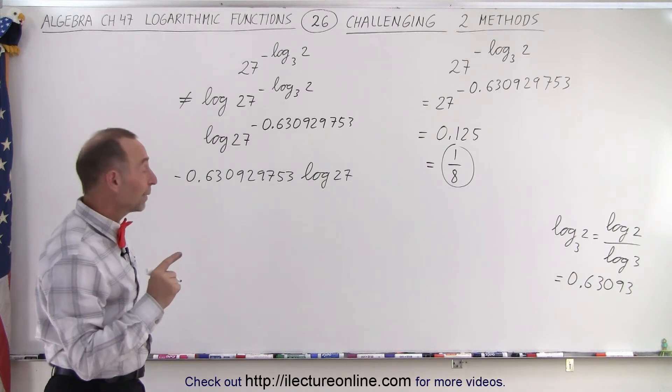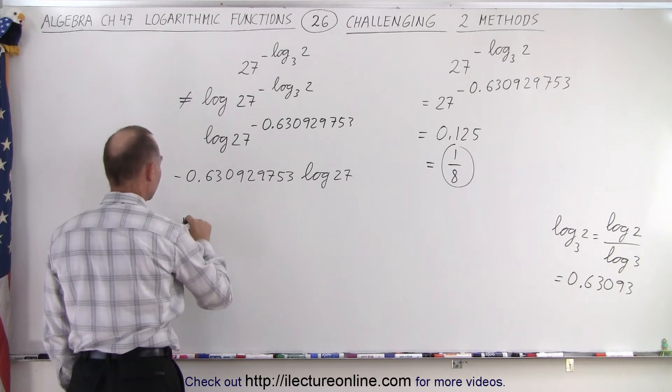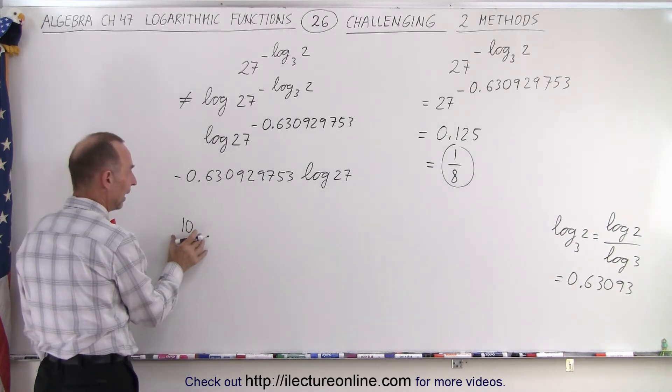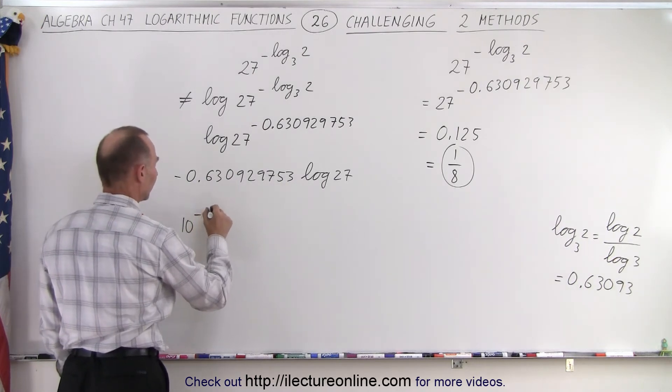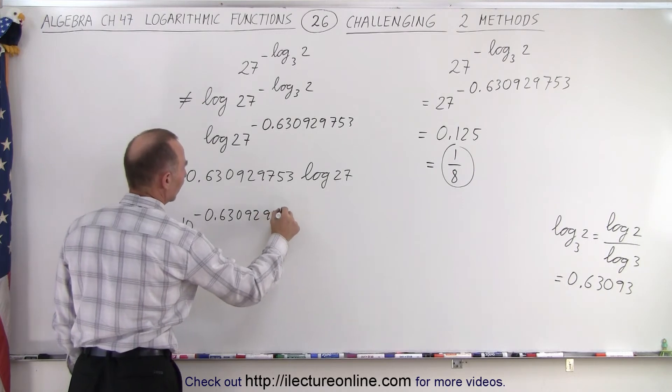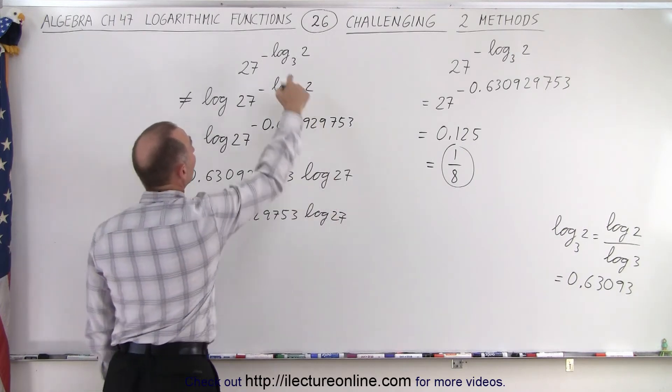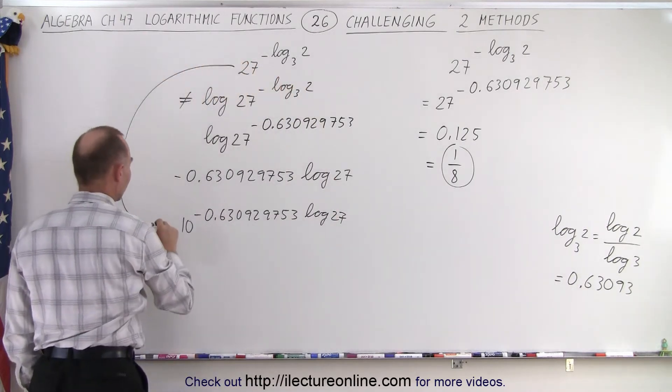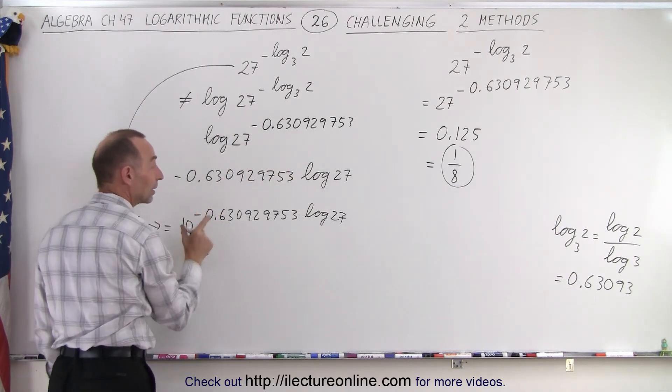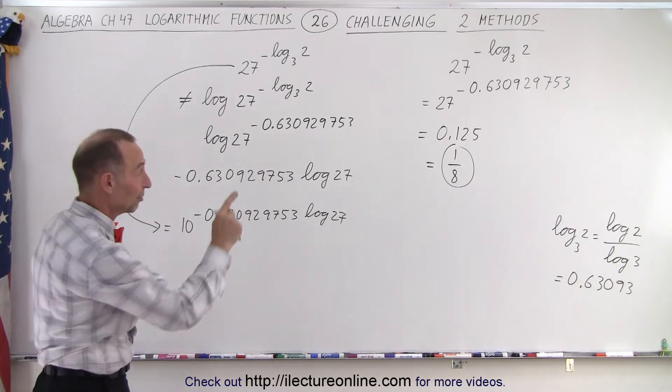Now what we could do is we could take the anti-log of that, and then it's back equal to what we started. So 10, so that's the anti-log. When I take the base 10 and raise it to this exponent, I get minus 0.630929753 times the log of 27. And that should equal what we started with. So first we take the log to put the exponent in front, then we take the anti-log, and now we have the same answer.